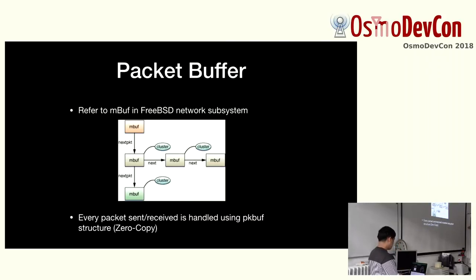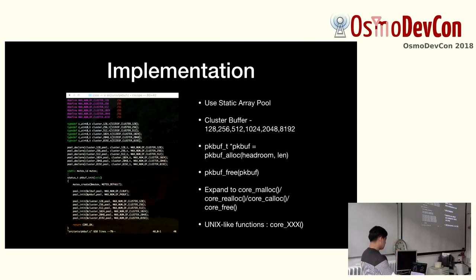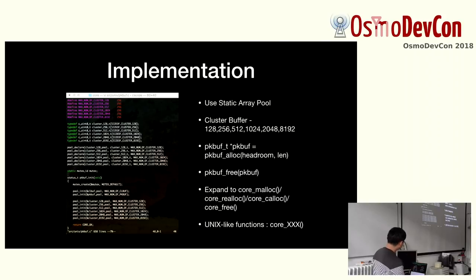Memory related to packet buffers has a slightly different structure, mostly used in the data plane. BSD has a structure called mbuf — this is a zero-copy implementation without memcpy when adding and removing IP, GCP, or HTTP headers in the data plane. We implemented this structure in our memory pool using a static array pool and a lock-free approach. The default number of buffers is 256, which should be updated later. Functions starting with core_malloc are taken from the packet buffer rather than the OS malloc.